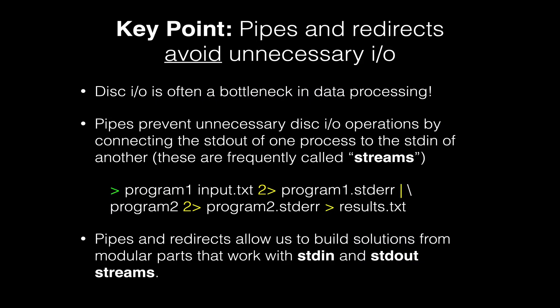The key point is that disk I/O — that's the input-output — which is often a bottleneck in data processing, especially in bioinformatics where we deal with many small files, can be avoided. Pipes and redirects avoid unnecessary writing and reading from disk by connecting the standard output of one process to the standard input of another. These are frequently called streams — streams of data running through these pipes. Program one takes input text, error goes to a separate error file, output goes to program two, which in turn writes to our results file.